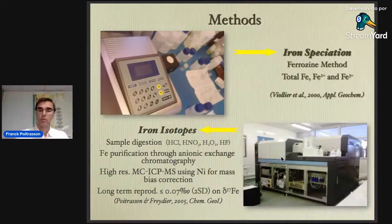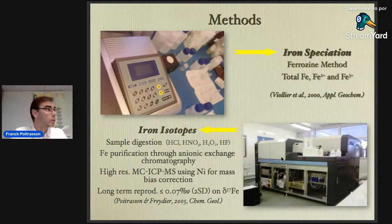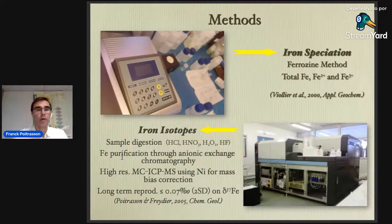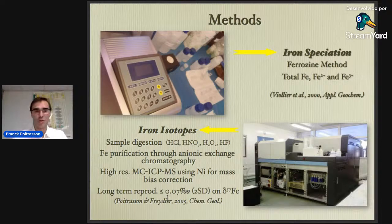On board during this trip, Daniel Mulolang studied the iron speciation, looking at the redox state of iron, which is a key parameter to fractionate iron isotopes. Back in the lab, we digest the samples — even the waters, because they contain suspended matter — then purify the iron through ionic exchange chromatography. After that, we do the measurement by MC-ICP-MS using methods we developed previously. Last week we set up the method for iron and silicon on these machines, and we expect a long-term reproducibility of about 0.07 per mil in two standard deviations on δ57Fe.